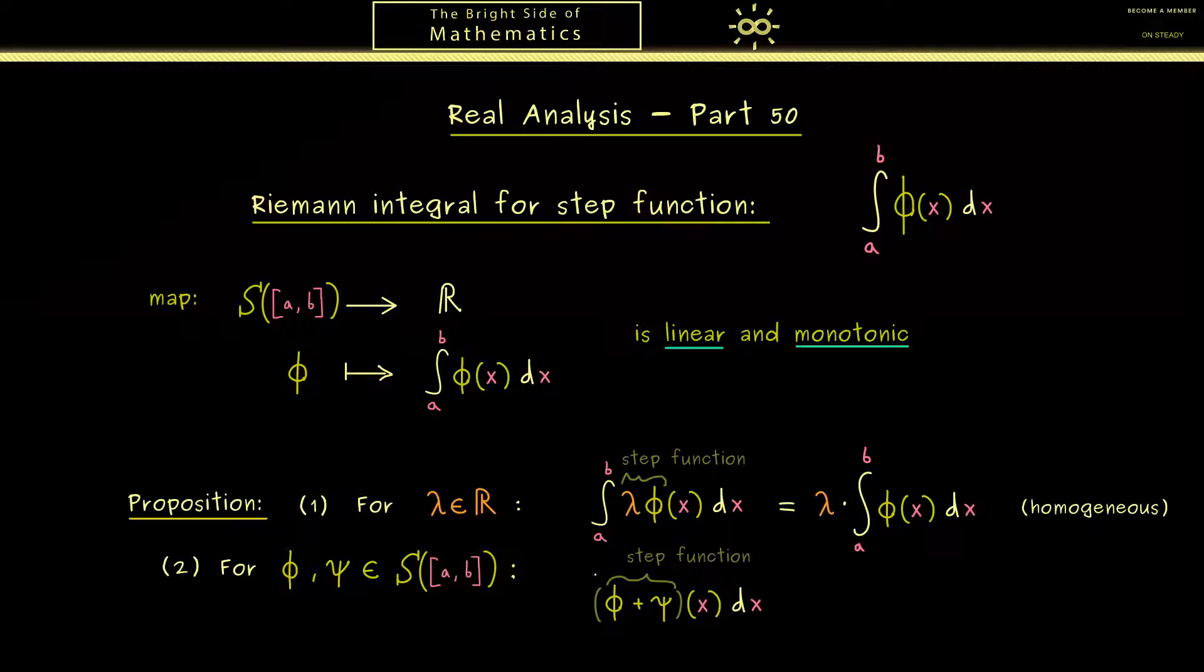However for us it's only important that we now can calculate the orientated area again. So we want the integral of the new step function. And also here we can use the integrals of the original step functions. More precisely we get take the integral of the first step function plus the integral of the second step function. So what you can remember is we are allowed to pull out this addition sign here. And this property in general in mathematics we call additive. Also you should remember these two properties together we usually call linear.